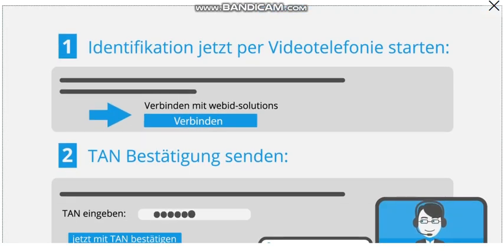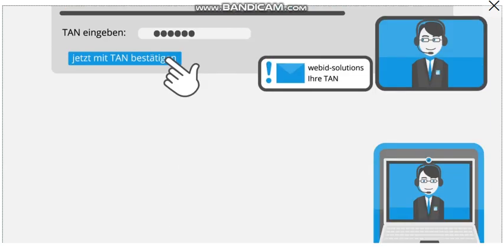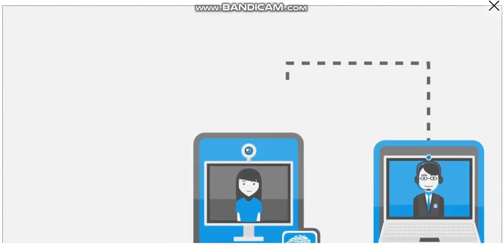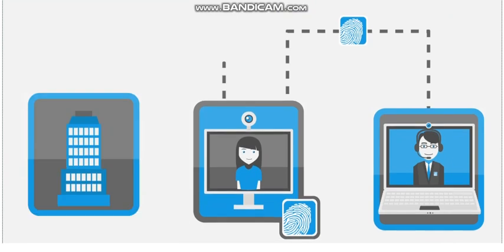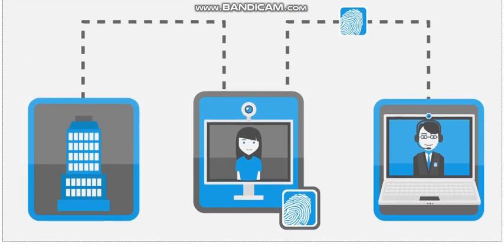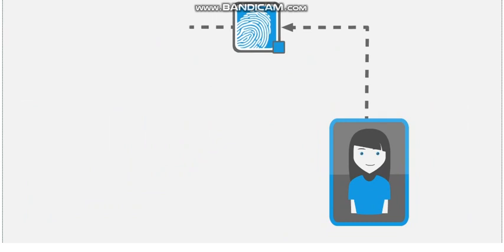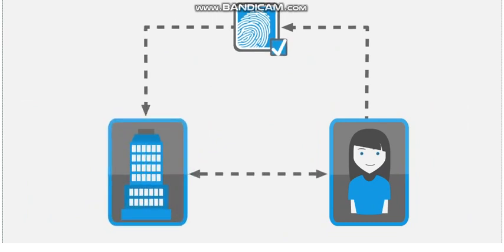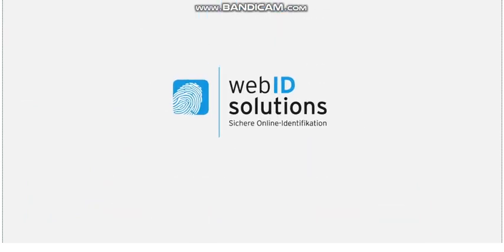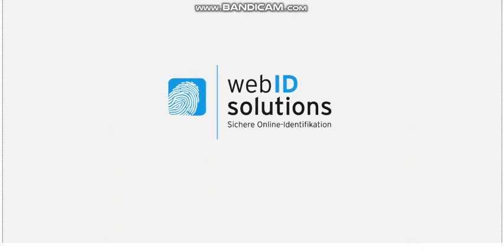You complete the identification by entering the 6-digit one-time password in the relevant field on screen. If your identity was successfully confirmed, your data is encrypted and transmitted to your financial service provider. You're all set with your WebID online identification.